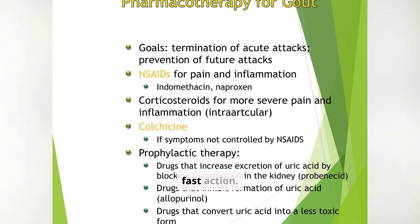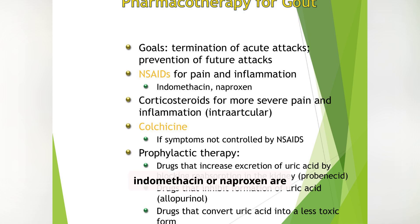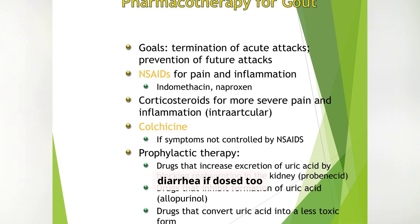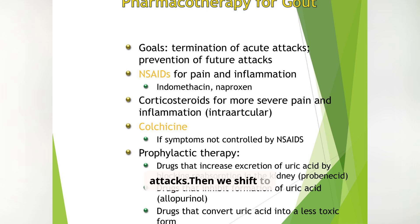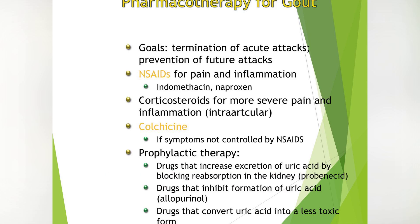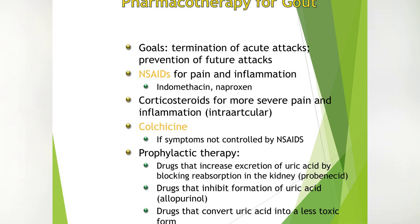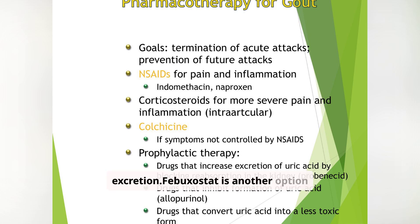An acute attack needs fast action. NSAIDs like indomethacin or naproxen are first-line. Colchicine is effective too, but causes diarrhea if dosed too high. Corticosteroids help in severe or monoarticular attacks. Then we shift to prevention: allopurinol blocks uric acid production, probenecid increases uric acid excretion, and febuxostat is another option when allopurinol isn't tolerated.